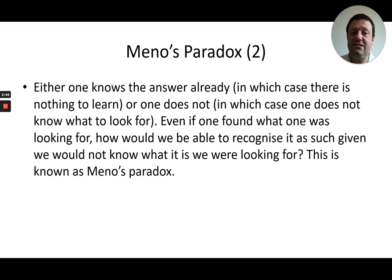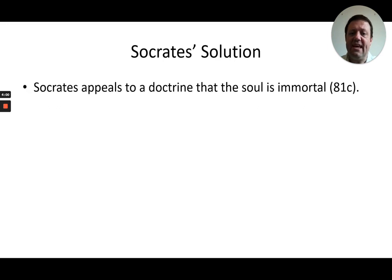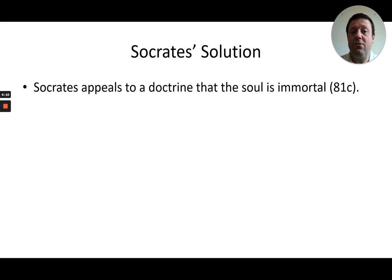Meno's paradox leads Socrates to suggest the idea of recollective knowledge — that we have a sort of faint recollection that we are able to grasp fully when we are questioned about it. Socrates appeals to the idea that the soul is immortal. This isn't fully developed in the dialogue Meno, but it is in the dialogue Phaedrus, which is well worth reading even though it's not on the spec.